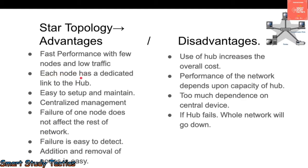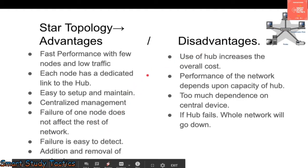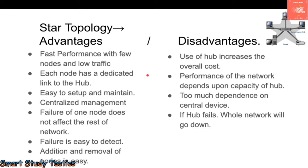Advantages of star topology: fast performance with few nodes and low traffic. Each node has a dedicated link to the hub, so you can directly connect your PC to the hub and access everything on the network. It is easy to set up and maintain. Centralized management — all data flows through the hub. Failure of one node does not affect the rest of the network, and addition or removal of nodes is very easy.